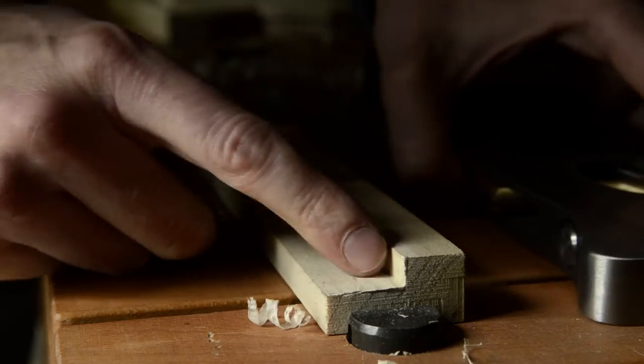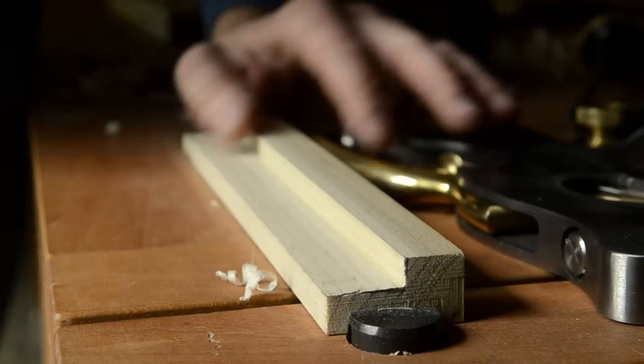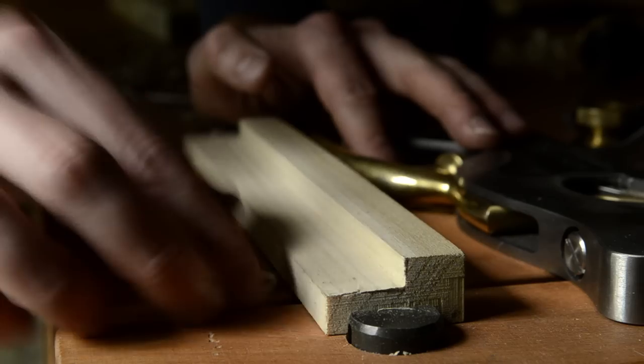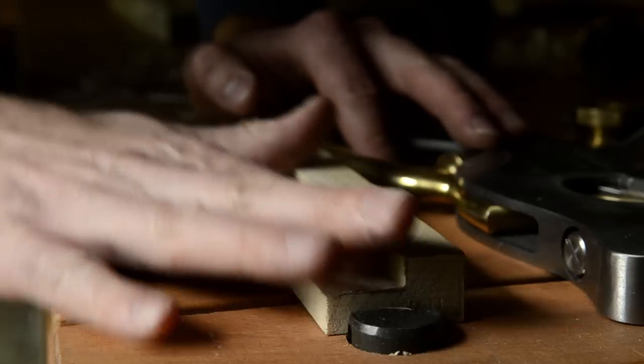Alright, so you can see that we pretty much got it down to our lines. And now you've got a rabbet joint. You can stick your glass in if you're using picture frames or whatever.